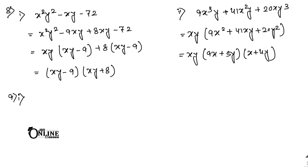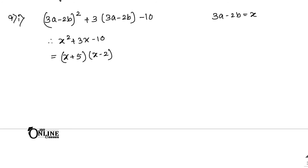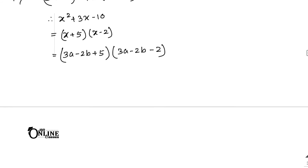Sum number 9.1: (3a minus 2b)² plus 3(3a minus 2b) minus 10. Let x equal (3a minus 2b), so the expression becomes x² plus 3x minus 10. By middle-term factorization: (x plus 5)(x minus 2). Substituting back: (3a minus 2b plus 5)(3a minus 2b minus 2) is the final answer.